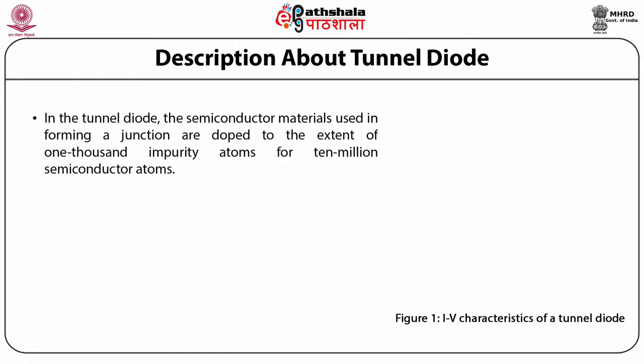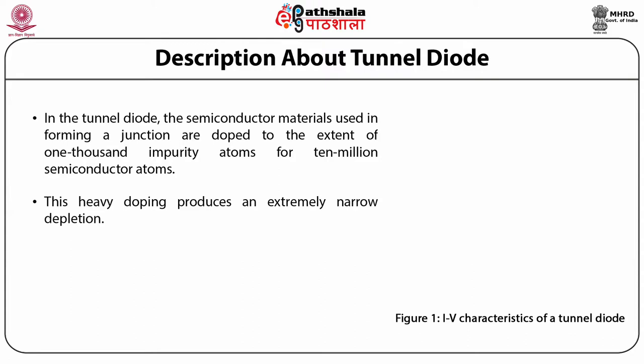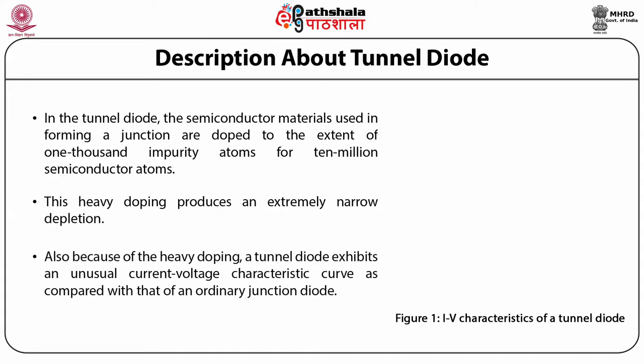In the tunnel diode, the semiconductor materials used in forming a junction are doped to the extent of 1000 impurity atoms for 10 million semiconductor atoms. This heavy doping produces an extremely narrow depletion region. Also, because of the heavy doping, a tunnel diode exhibits an unusual current-voltage characteristic curve as compared with that of an ordinary junction diode, as shown in this figure.